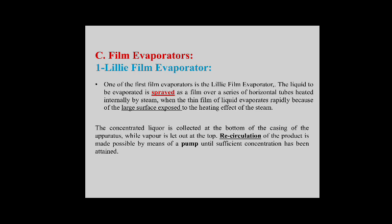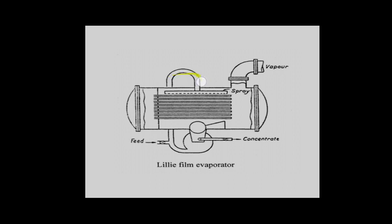Film evaporators — the lily film evaporator is one of the first film evaporators. The liquid to be evaporated is sprayed as a film over a series of horizontal tubes heated internally by steam. The material is sprayed onto hot steam tubes and the concentrate is collected after evaporation.